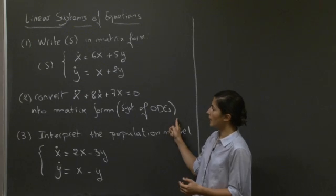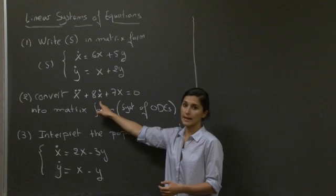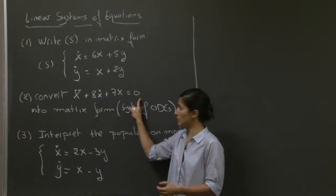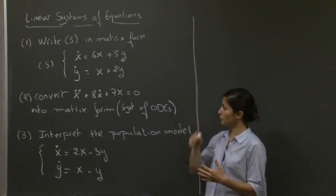The second part asks us to convert a differential equation of the second order, x dot dot plus 8x dot plus 7x equals 0, into matrix form, basically into a system of ODEs similar to the first part.